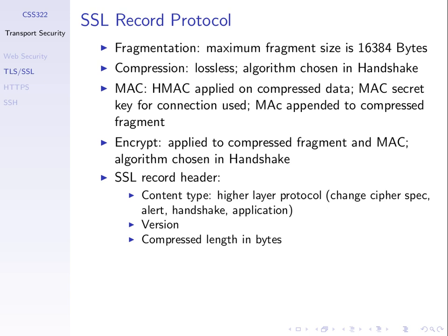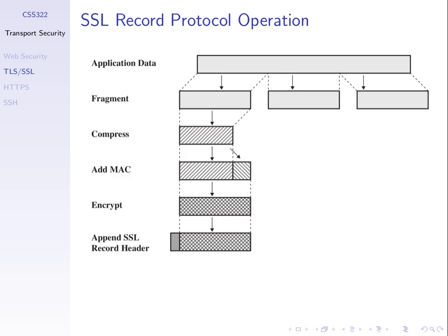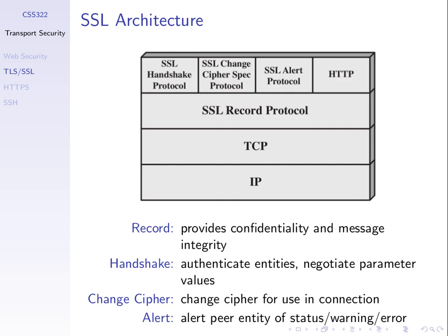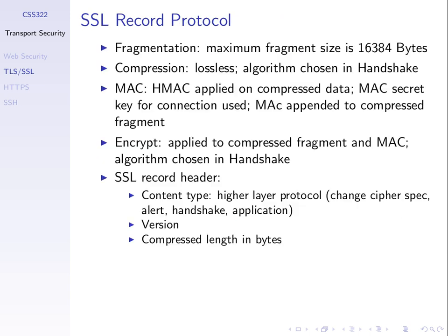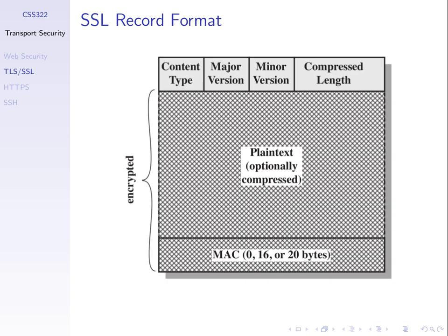We need to specify which MAC function to use — HMAC is a common one. A MAC function uses a key, so we also choose a key. It is applied per connection and added at the end of the fragment. We encrypt using an algorithm chosen in the handshake, with multiple algorithms to choose from. The SSL record header added at the end indicates the content type — whether this is a handshake protocol message, a cipher spec, an alert, or application data — along with the protocol version and the length in bytes.